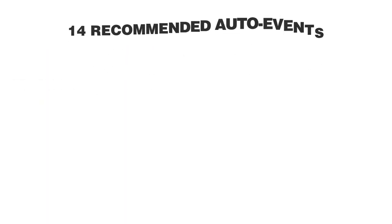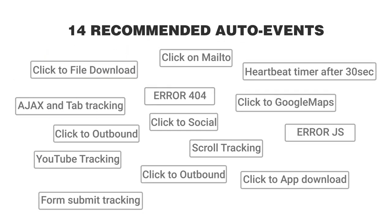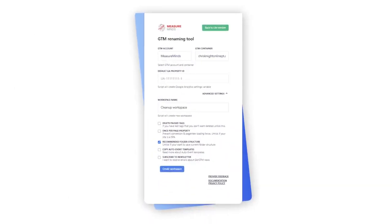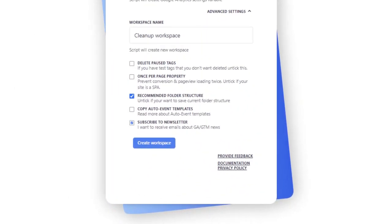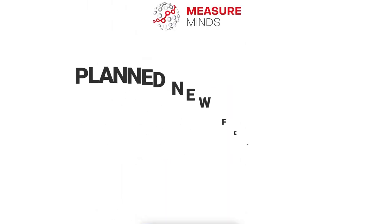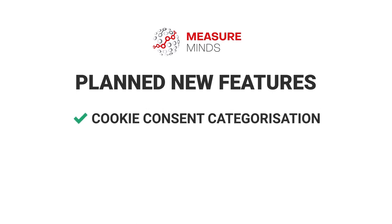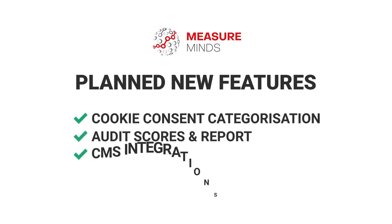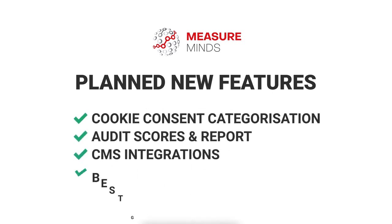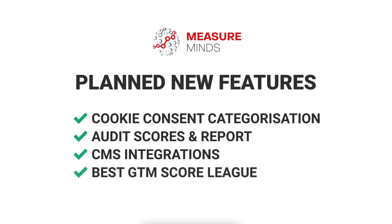The pro version now has 14 recommended auto events to improve data collection. New features are being added every month, so remember to tick the box to subscribe to be notified when new features are released. Planned new features include cookie consent categorization, audit scores and reports, CMS integrations, and best GTM score league.